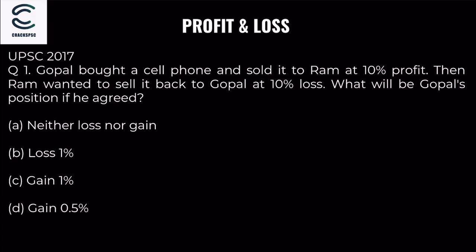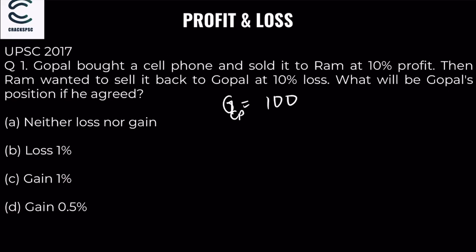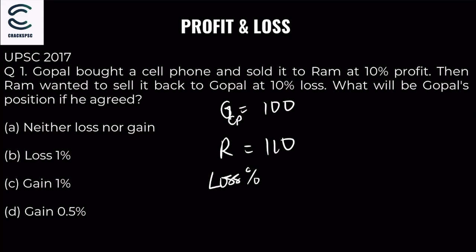Let's solve it properly. Suppose Gopal bought the phone for 100 rupees (cost price = 100). He sold it to Ram at 10% profit, so Ram's cost price is 110.